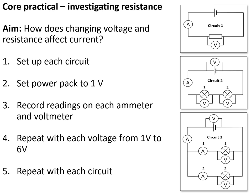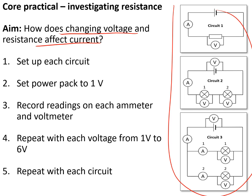In the core practical investigation of resistance, we investigated how changes in potential difference and resistance affect the current. We set up three different circuits: a standard circuit with a resistor, one with two bulbs in series, and one with two bulbs in parallel. We set the power pack to one volt, recorded the readings on the ammeter and voltmeter, then repeated it increasing voltage from one volt up to six volts for each circuit.